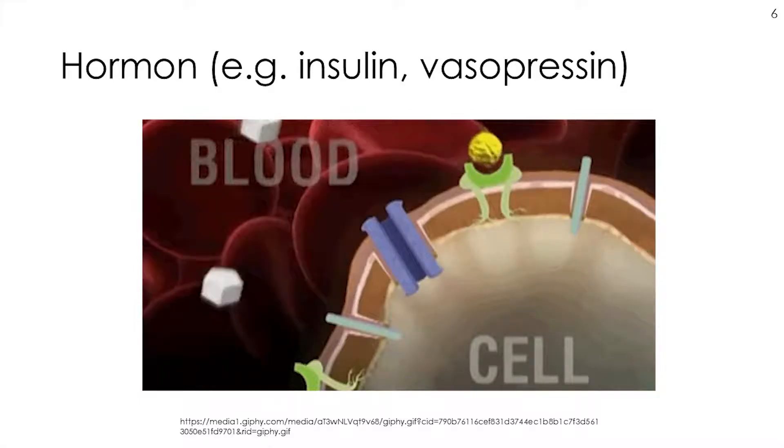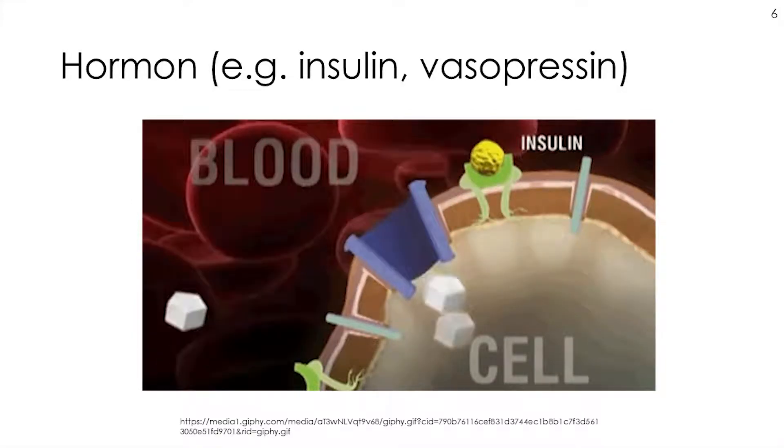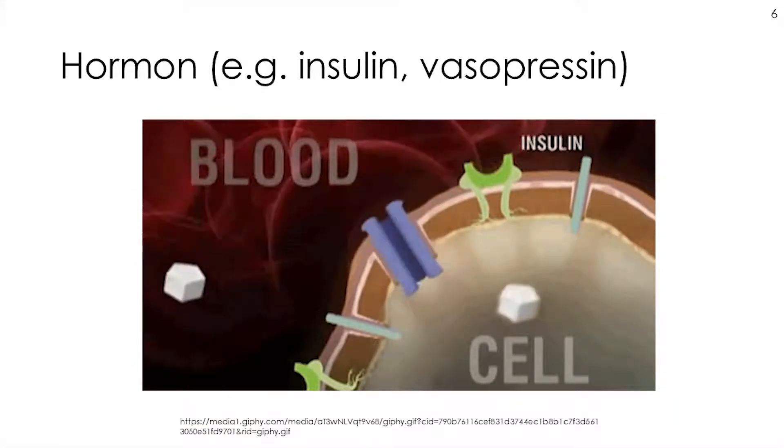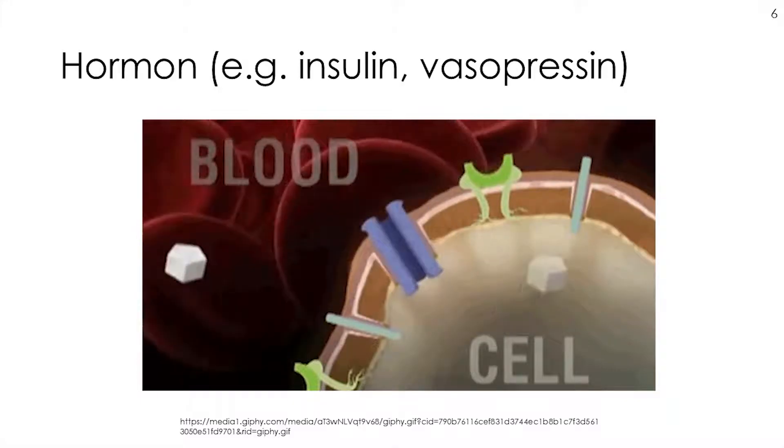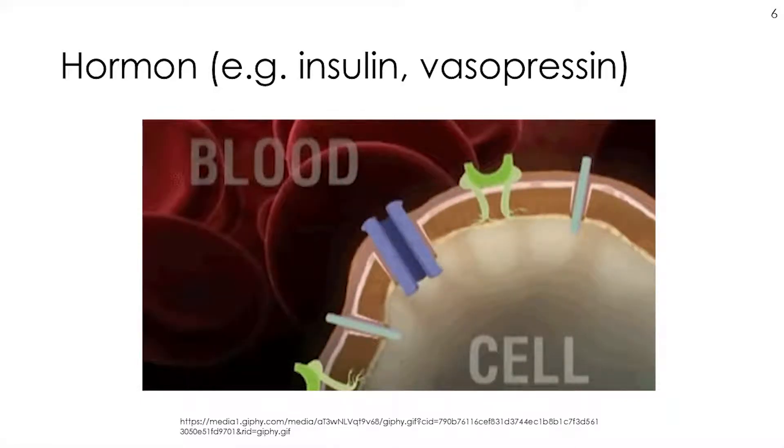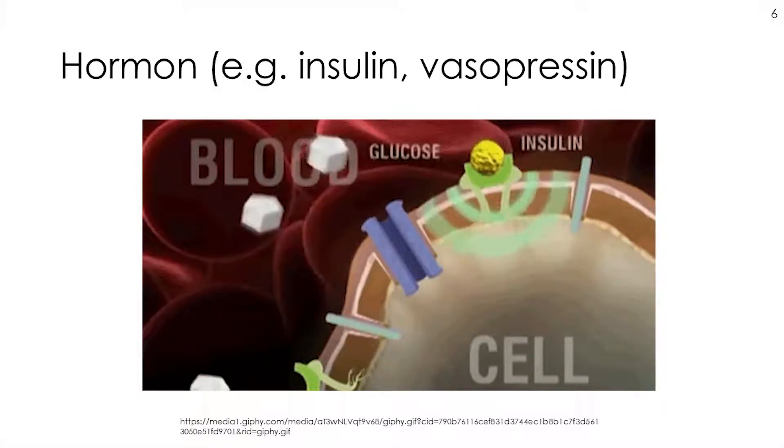A good example of endocrine transport is the release of hormones like insulin into the bloodstream. The GIF shows how a receptor on the cell surface picks up insulin from the bloodstream and processes glucose to maintain energy for the cell and keep blood sugar in check. We've got multiple types of transport over different distances and time frames.